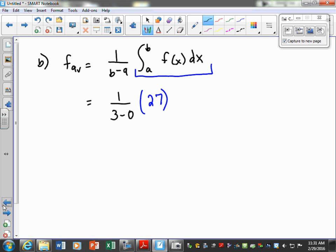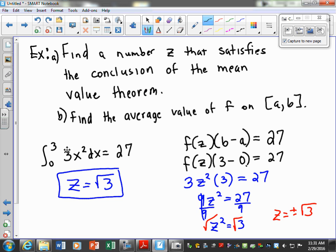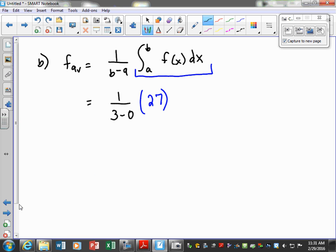I'm getting that from right here. This is a piece of given information. So that's just going to be 27 divided by 3, so our average value is going to be 9.